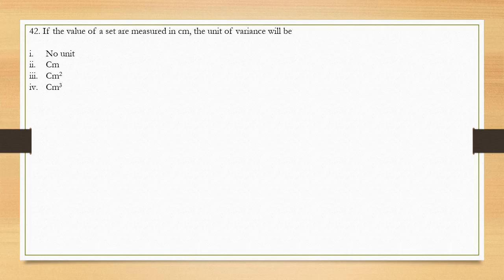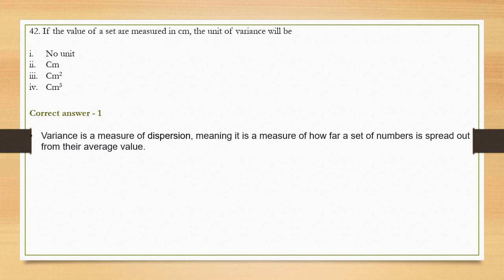Question number 42: If the values of a set are measured in centimeters, the unit of variance will be — options are no unit, centimeter, centimeter squared, or centimeter cubed. The correct answer is option 1, no unit. Variance is a measure of dispersion — how far the numbers spread from the mean. Normally variance takes the square of the mean's unit, but in this case of centimeters we do not assign a unit to variance. So do not confuse it with centimeter squared.